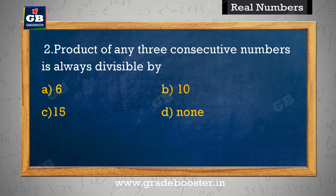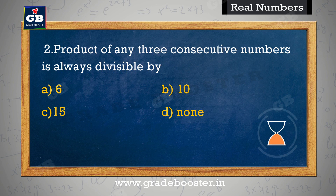Product of any 3 consecutive numbers is always divisible by. Koi bhi 3 consecutive numbers ka product hamesha iske dwara divisible hota hai. A. 6, B. 10, C. 15, D. None.